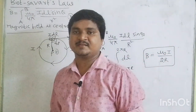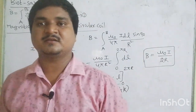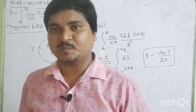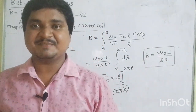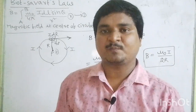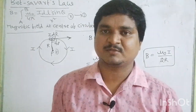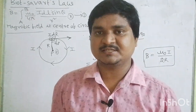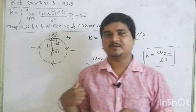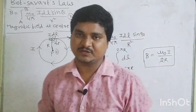To summarize the formulas: for an infinite straight wire B = μ₀I/2πr, for a semi-infinite wire B = μ₀I/4πr, and for a circular coil at center B = μ₀I/2r. Based upon this video, the numerical problems will be covered in the next video. Thank you.